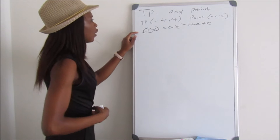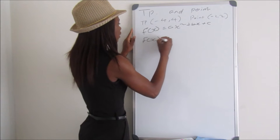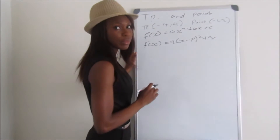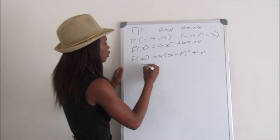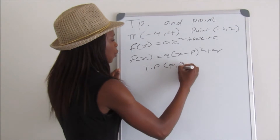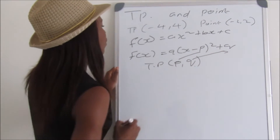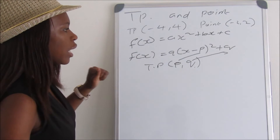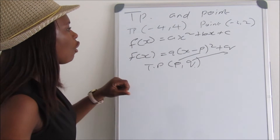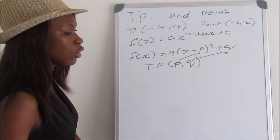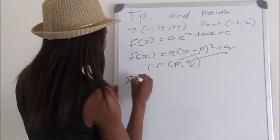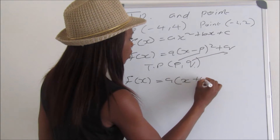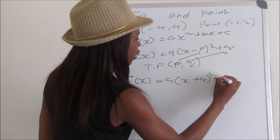We use the vertex form of the parabola: f(x) = a(x - p)² + q, where the coordinate of the turning point is (p, q). We substitute the turning point into this equation, giving f(x) = a(x - (-4))² + 4, which simplifies to a(x + 4)² + 4.